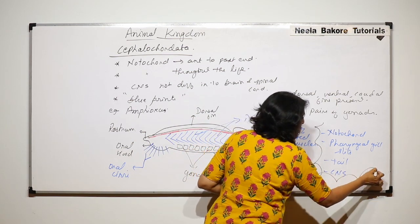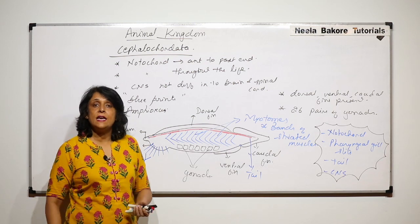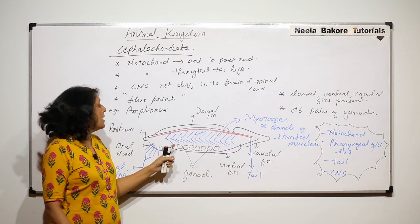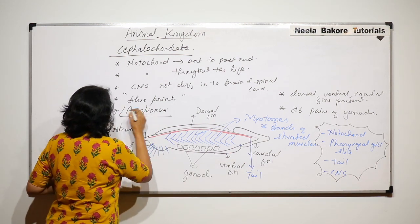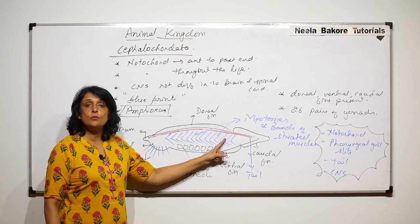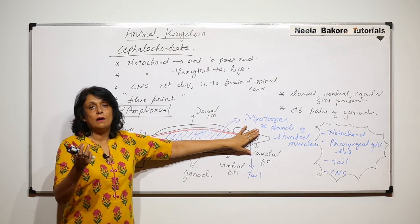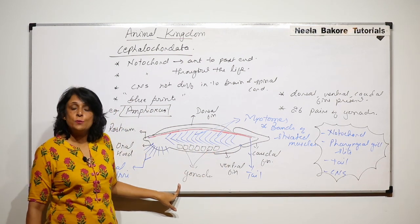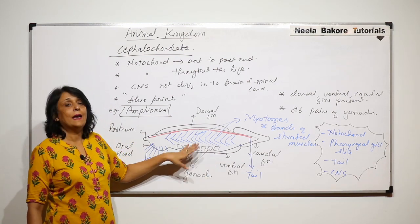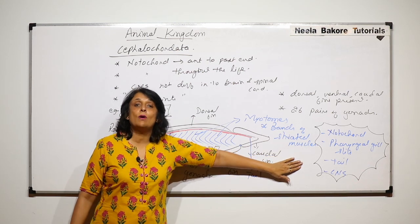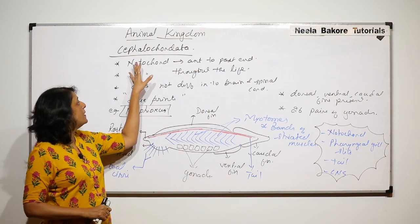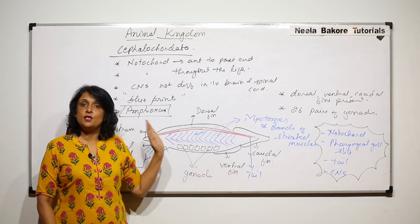These are all chordate characters which are very clearly seen in cephalochordates. The most important example is Amphioxus. In Amphioxus, the clearly visible features are the myotomes — skeletal or striated muscle bands — 26 pairs of gonads, and dorsal, ventral, and caudal fins for locomotion. Because they show all chordate characters throughout their life, they are considered the blueprints of phylum Chordata. This is the subphylum Cephalochordata.